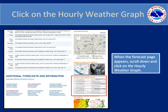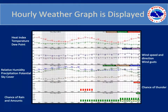This will bring you to our point-and-click forecast page. From here, scroll down and find the hourly weather graph on the right-hand side of the page. Click on the hourly weather graph image. You should now be on the hourly weather graph webpage. Above the graph, there are a few options you can add to the page. After selecting additional options, click submit.